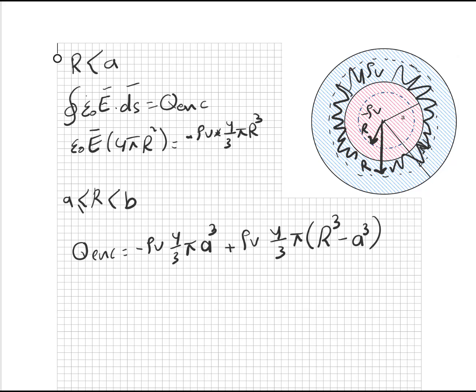هاي Q نكلوز، تعوض بقانون قاوس وتبسط وتطلع الإلكتريك فيلد لهاي المنطقة. المنطقة الأخيرة اللي R أكبر أو يساوي B، Q نكلوز هنا راح تكون: الكرة الداخلية ذات شحنة ناقص رو في في الحجم اللي هو أربع على ثلاثة باي A تكعيب، زائدا الشحنة الثانية اللي هي رو في.